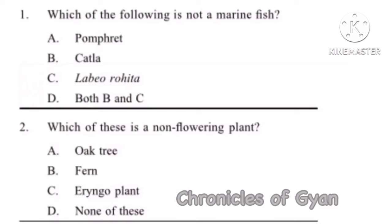Question 1: Which of the following is not a marine fish? Marine fish are fish that live in the ocean and are adapted to life in a saltwater environment. Some examples of marine fish include clownfish, tuna, great white shark, mackerel, angelfish, and pomfret.